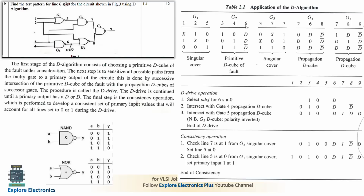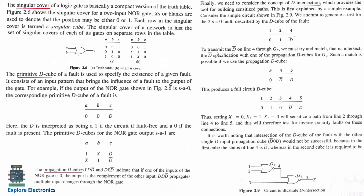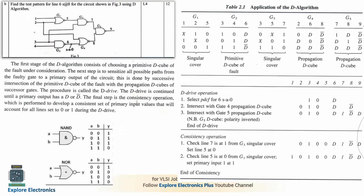Line 6 is the output of G2, a NAND gate. We set D=1 (SA0 fault means the line is stuck at 0, so the correct value is 1 and faulty is 0; D represents this difference). D=1 only when one input is 0: for input (1,0) the output is D; for (0,1) it is D; for (1,1) it is D-bar. This gives the primitive D cube of the faulty gate.